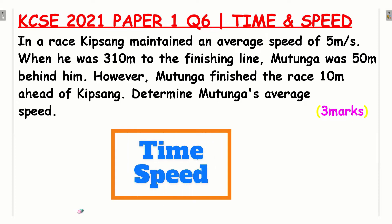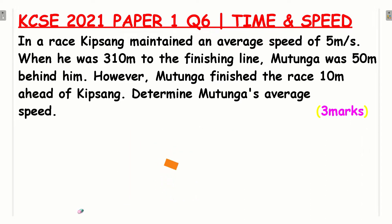In a race, Kip Sang maintained an average speed of 5 meters per second. When he was 310 meters to the finishing line, Mutunga was 50 meters behind him. However, Mutunga finished the race 10 meters ahead of Kip Sang. Determine Mutunga's average speed.